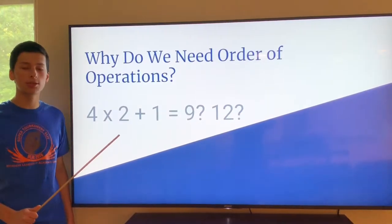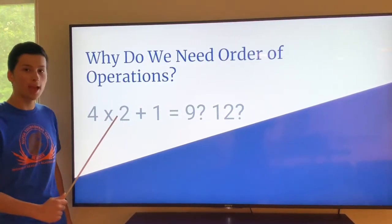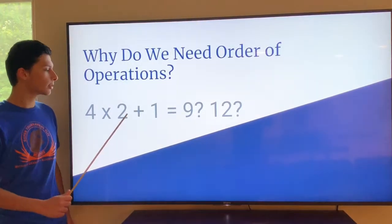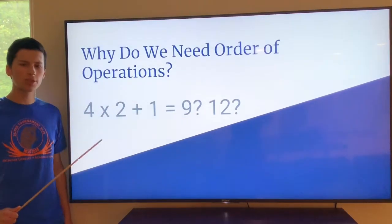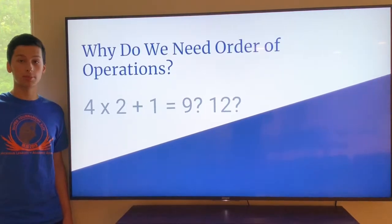Now there are two possible interpretations. You could do 4 times 2 first, which is 8, and then add 1 to that, and 8 plus 1 is 9. Or you could do 2 plus 1, which is 3, and then multiply that by 4, which is 12. So there are multiple interpretations for the same solution, and that's where order of operations comes into play.